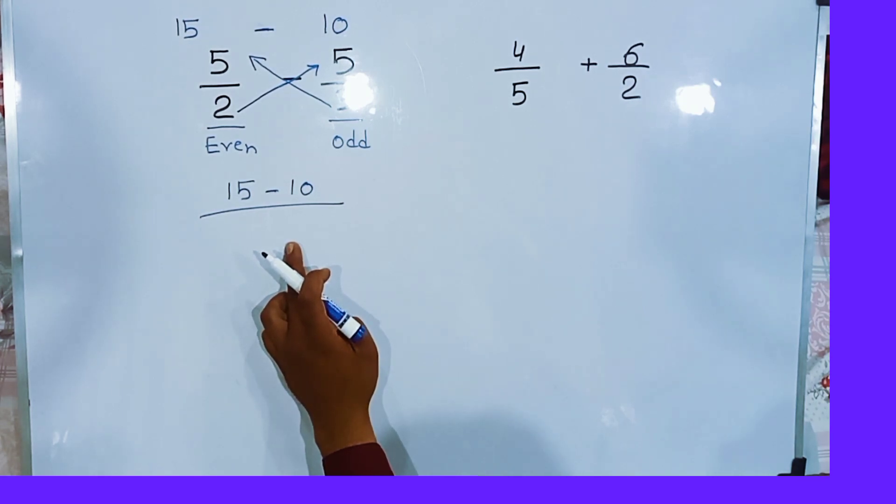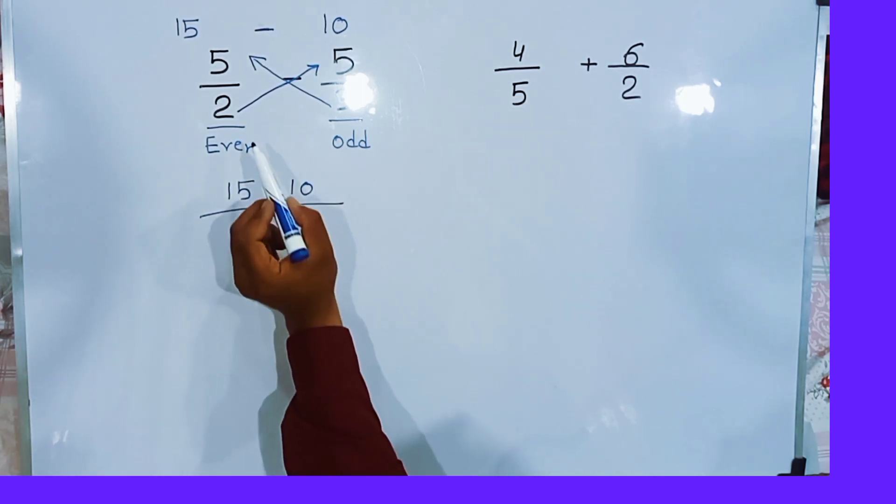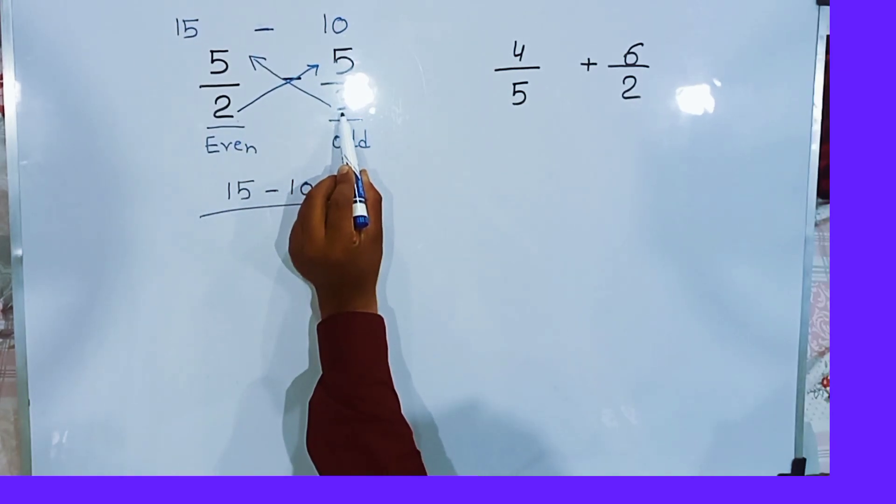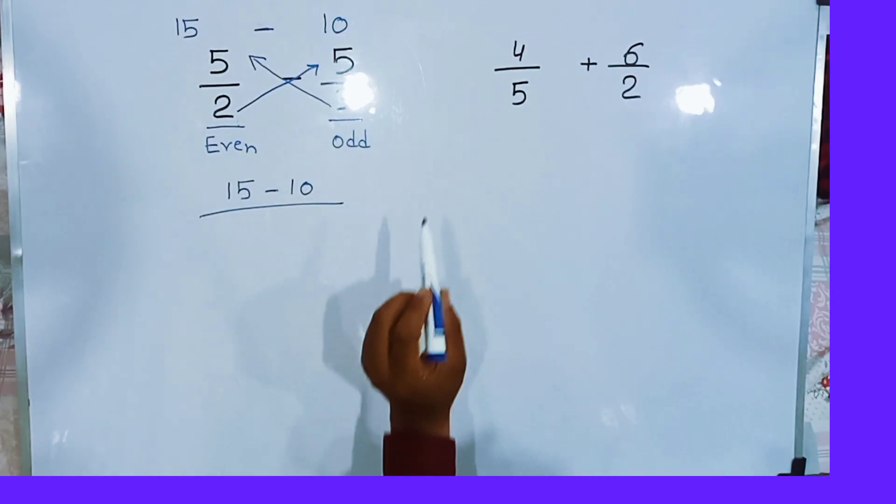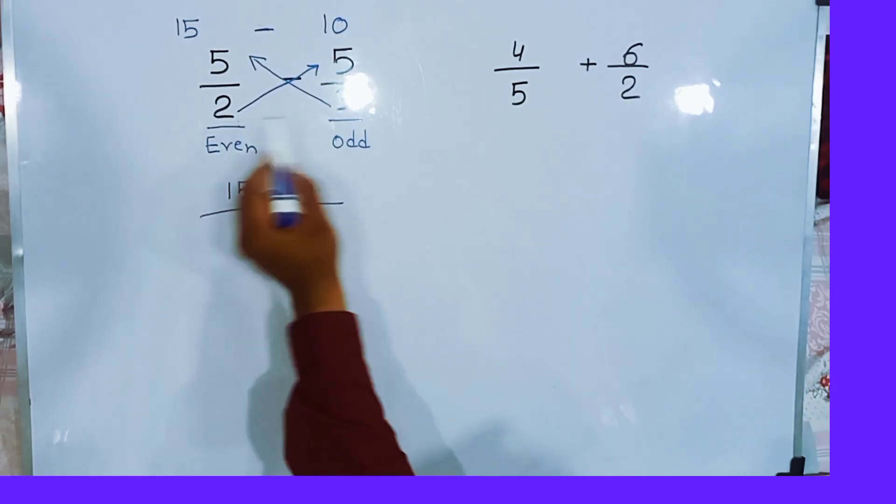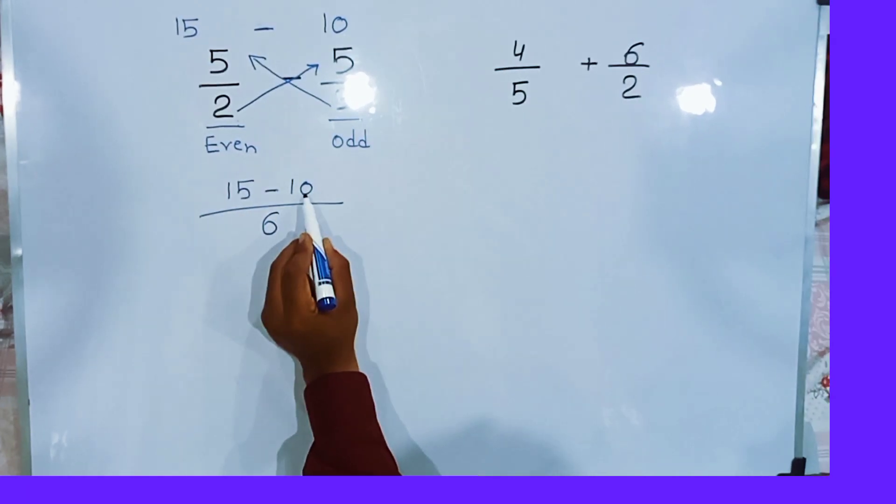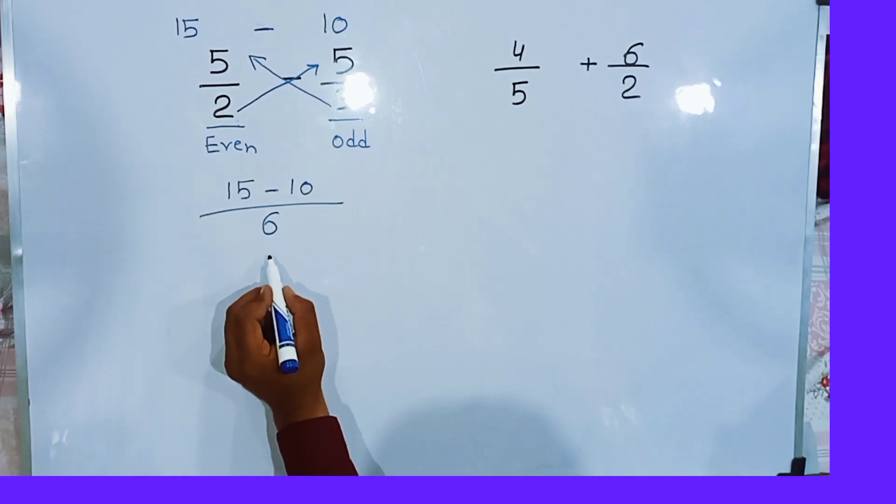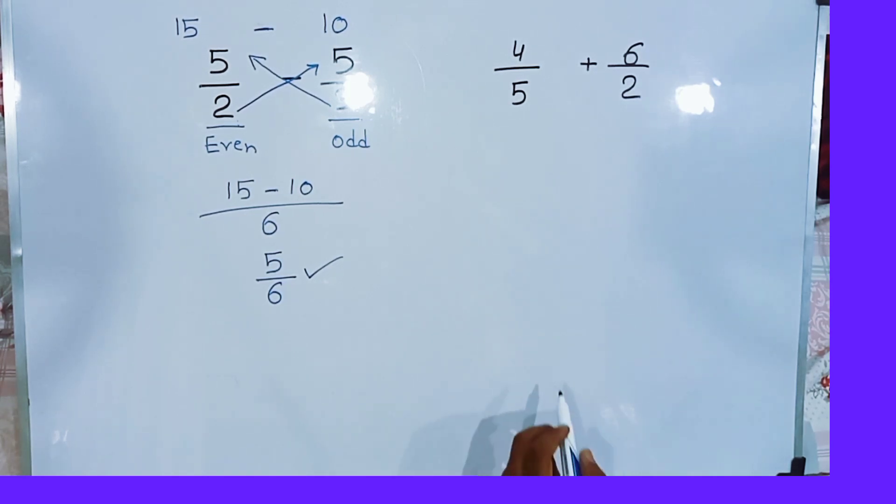Now, what will be the value in the denominator? For finding the value in the denominator, we simply multiply 2 with 3. When we multiply 2 with 3 we will get 6. Then 15 minus 10 we will get 5, and the denominator is 6. This is the final answer. Now the second fraction is 4/5 plus 6/2.